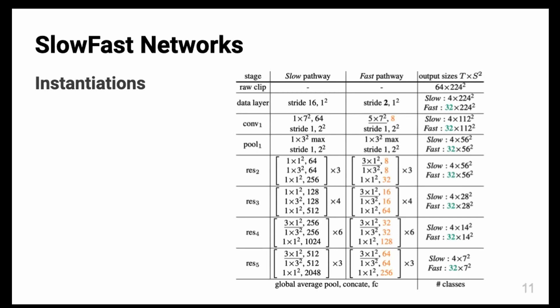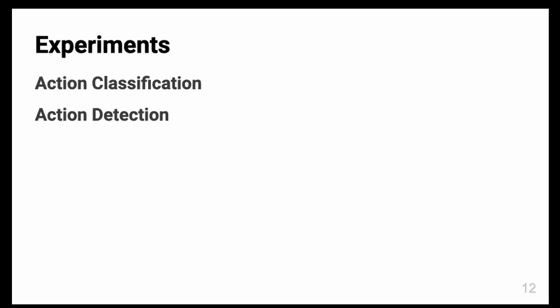This is the instantiation spec of the system. The thing we need to focus here is the orange and green marks. Orange marks mean that the fast pathway has less channels containing spatial information, and green marks that the fast pathway has denser inputs indicating higher temporal resolution.